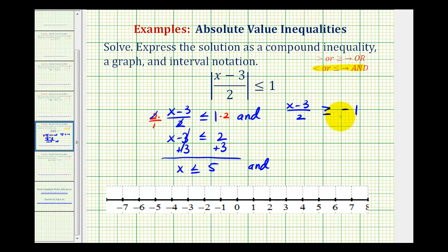And now we'll solve the second inequality. Again, the first step is the same. We're going to multiply both sides by two. So this simplifies out and we're left with x minus three is greater than or equal to negative two. Add three to both sides. And here we have x is greater than or equal to positive one.